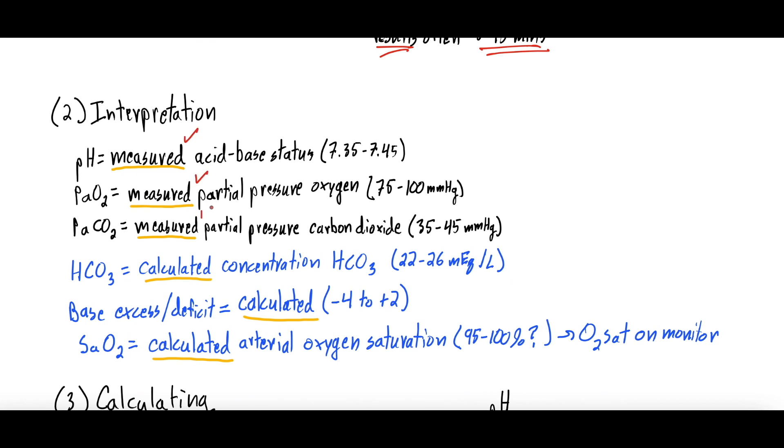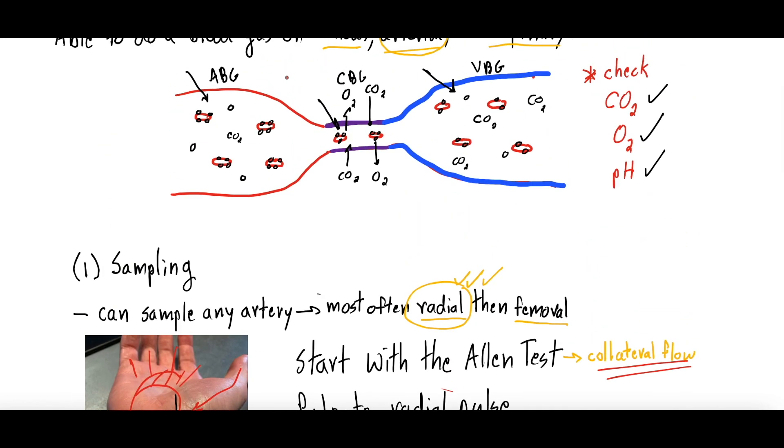So once you get it back, what does it tell you and how do you interpret it? So there's a few things that are measured, and there's a few things that are actually derived or calculated from the sample. The pH is measured, and that's the acid-base status of the blood, and the normal values for that are 7.35 to 7.45 - we kind of use 7.4 as a general normal. It also measures the PaO2 - this is the partial pressure of oxygen in the blood vessel - and that's 75 to 100 millimeters of mercury.